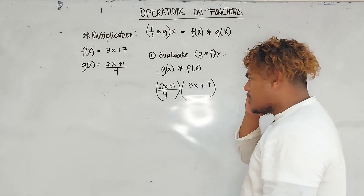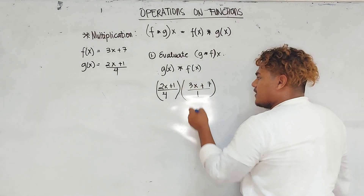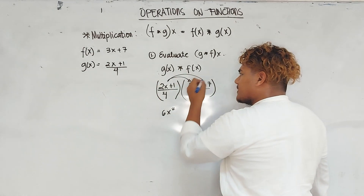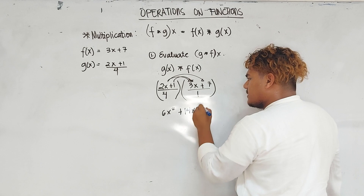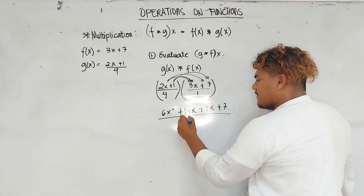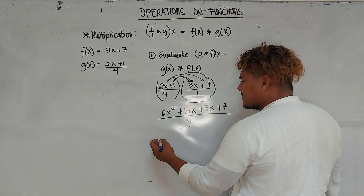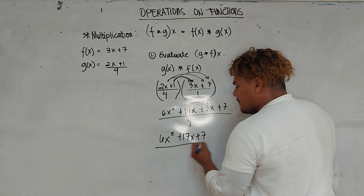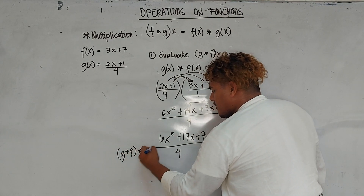How do you multiply a fraction and a whole number? Remember that a whole number has an imaginary denominator of 1. So 2x times 3x is 6x squared; 2x times 7 is 14x; 1 times 3x is 3x; 1 times 7 is 7, over 4 times 1, which is 4. Combining like terms: 14x plus 3x is 17x. So the final answer is 6x squared plus 17x plus 7 over 4. That is your g times f of x.